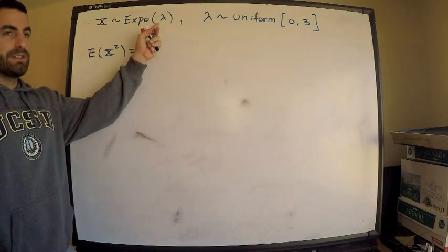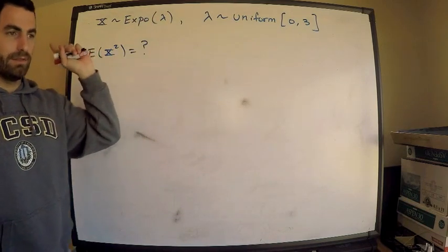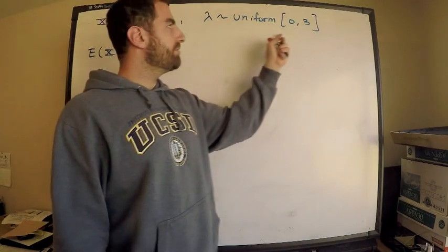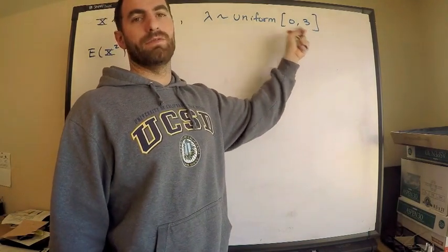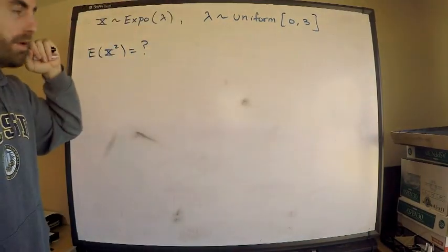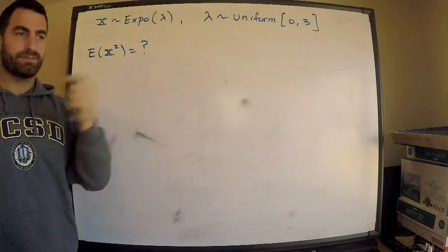I have x is an exponential random variable with mean lambda. Furthermore though, lambda, actually the mean of x, lambda, is actually distributed uniform on the interval from 0 to 3. I want to know what is the second moment of x.